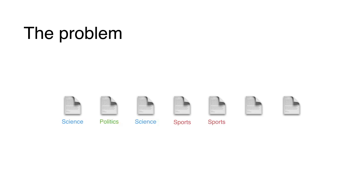So here is the problem. We have a collection or a corpus of documents — you can think of them as news articles. Each news article has a topic: some of them are science, politics, or sports, and some are allowed to have two topics. But the problem is that we don't know the topics to begin with. We only know the text of the articles and we'd like an algorithm that helps us sort these documents into topics.